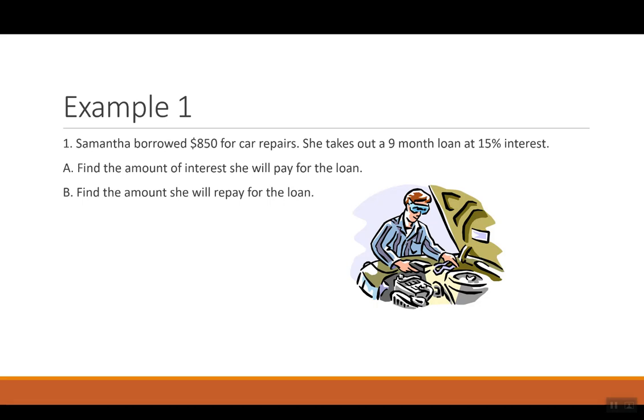So let's take our first example. Samantha borrowed $850 for car repairs. She takes out a nine-month loan at 15% interest. We want to find A, the amount of interest she pays for the loan, and then B, the amount she will repay.